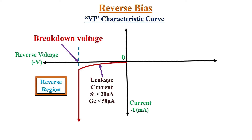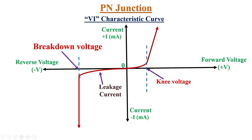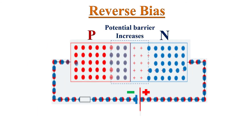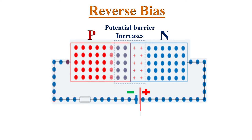But there is a maximum limit for this reverse voltage. If we increase the reverse voltage further, breakdown of the PN junction takes place and a high amount of current starts flowing through the PN junction. The voltage corresponding to this point is called the breakdown voltage, and this region is called the breakdown region. The effect due to which breakdown occurs is known as the avalanche effect.